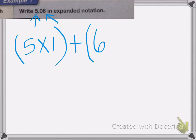So first, the 5 is in the 1's place. So to write that in expanded, it's going to be 5 times 1. And then we add the next section. My next one is the 6 is in the 100's place. So we're going to do 6 times 1 hundredth. Now if you notice, there's nothing in the 10's place, so I don't need to put anything there. And that is how you write it in expanded notation.